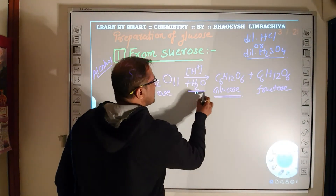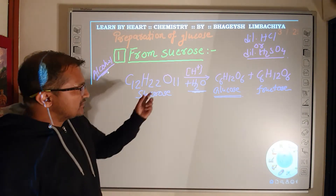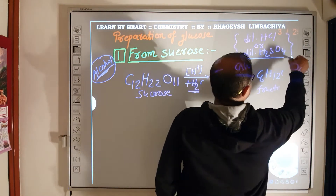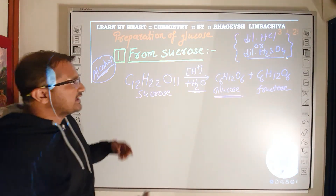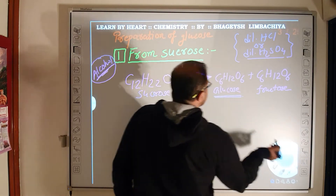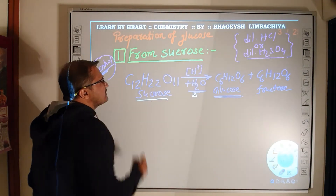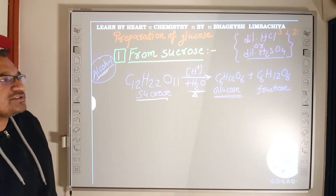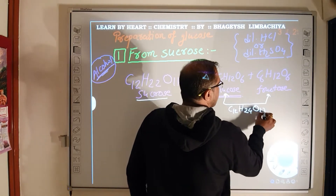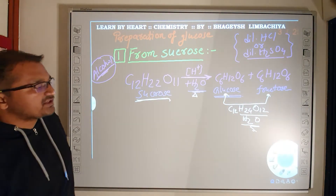In summary, sucrose plus one water molecule gives glucose and fructose in the presence of an acid catalyst (H+, dilute HCl or H2SO4), and the mixture is heated — hence we write delta. The formula of sucrose is C12H22O11. If we add the formulas of glucose and fructose we get C12H24O12, and if H2O is removed we get sucrose back. This completes the first preparation.